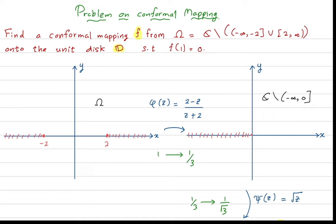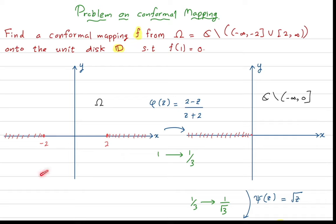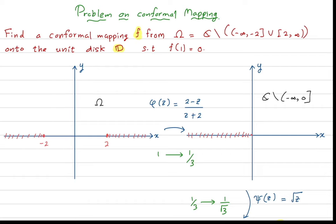So what is this domain omega? Omega is the complex plane with two portions removed: the ray from minus infinity to minus two, and this line segment from two to plus infinity. You can note that omega is a simply connected domain, because if you take any arbitrary closed curve you can shrink it to any given point in this domain.